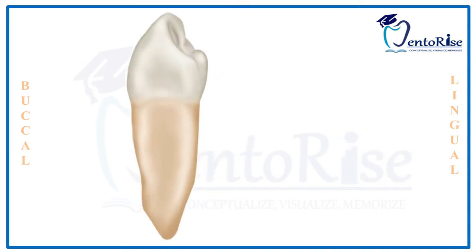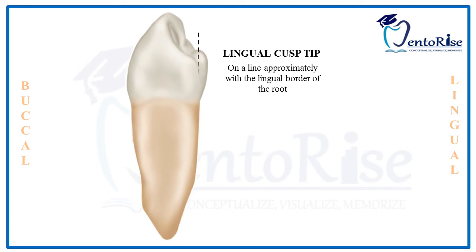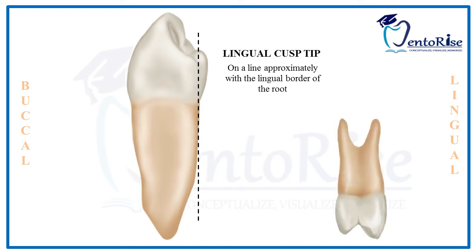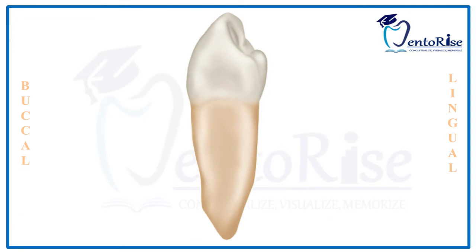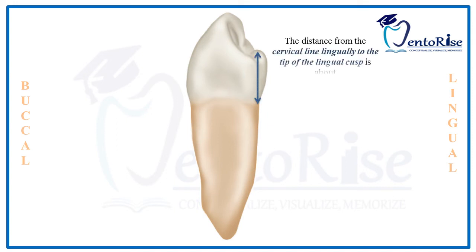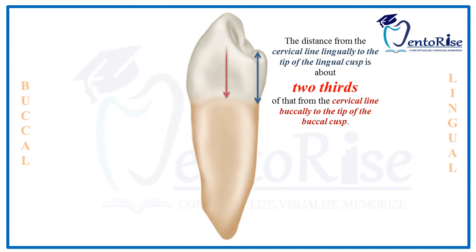The fourth heading is the lingual cusp. The tip of the lingual cusp is placed on a line approximately with the lingual border of the root. Please observe the figure carefully. If we compare it with the maxillary posterior teeth, this is different because in maxillary posterior teeth, both the buccal and lingual cusp tips are well within the confines of the root trunks. Comparing the distance from the cervical line: the distance to the tip of the lingual cusp is two-thirds of the distance to the tip of the buccal cusp. The lingual cusp is shorter in length compared to the buccal cusp.